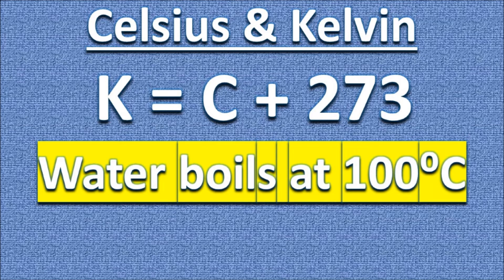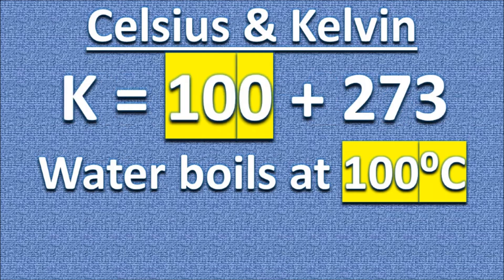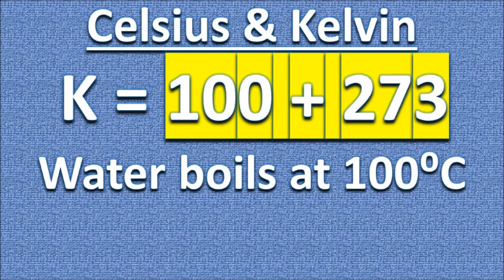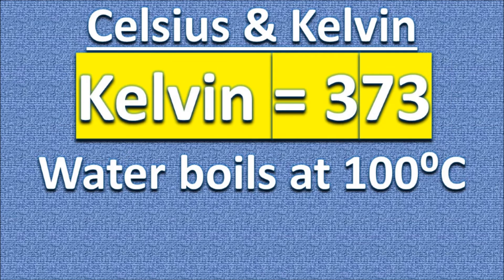Water boils at 100 degrees Celsius. Very simply plug that in for C. 100 plus 273. So when water boils at 100 degrees Celsius, on the Kelvin scale that's approximately 373.